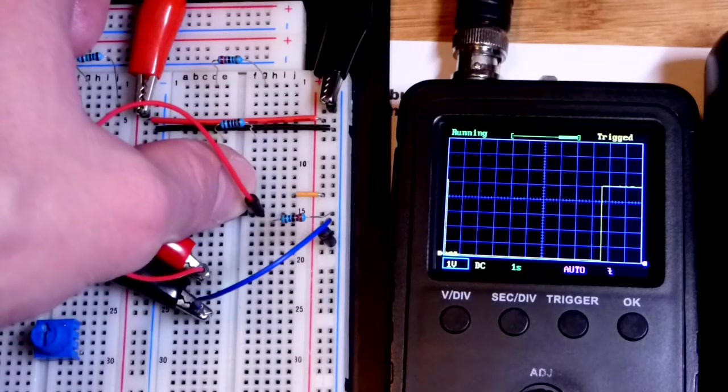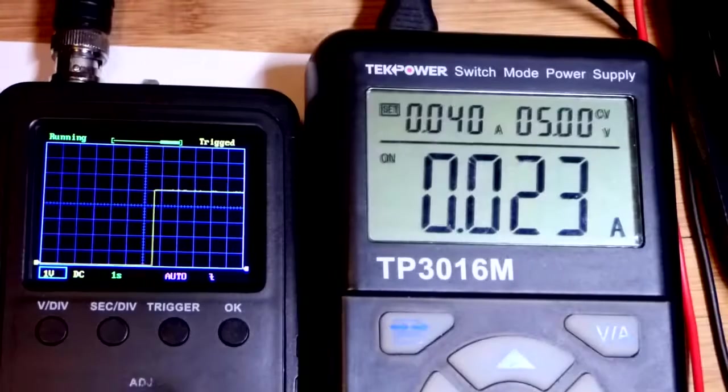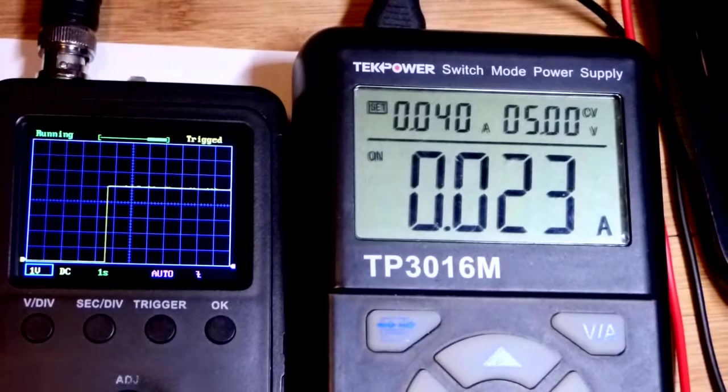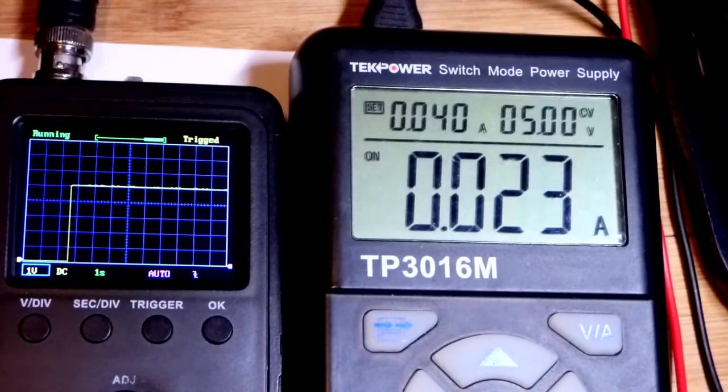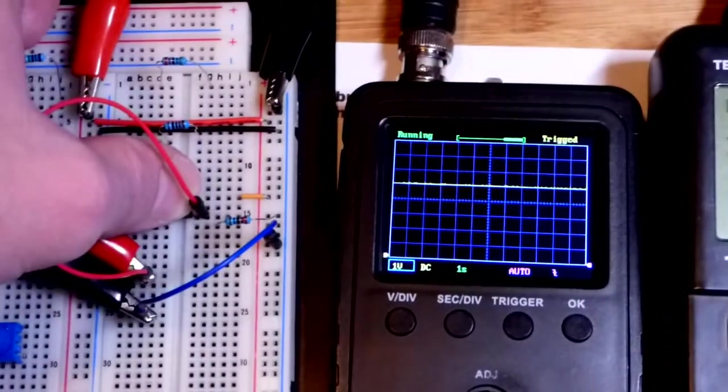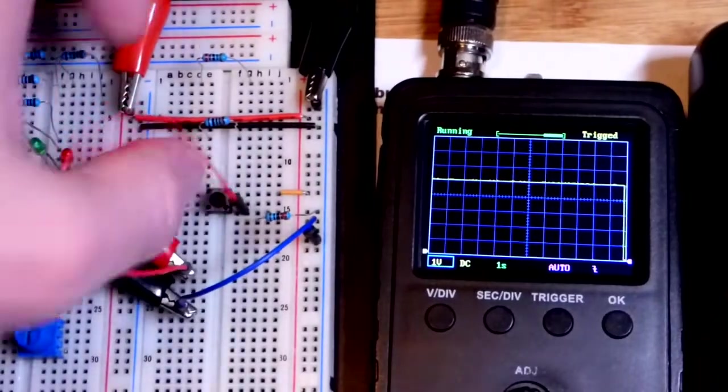There we go, we got zero volts. But if I press the switch now, we have five volts across the resistor. With five volts across the resistor it's setting the current as you can see there.